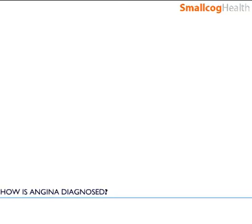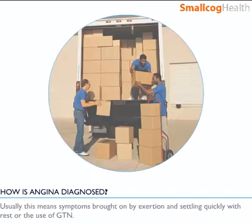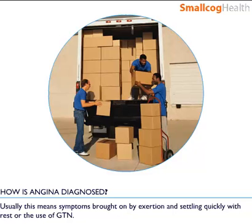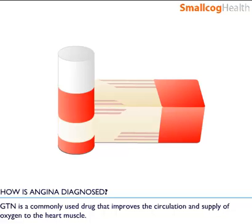How is angina diagnosed? The diagnosis of angina is largely based on the patient's description of the characteristic symptoms associated with the condition. Usually this means symptoms brought on by exertion, then settling quickly with rest, or the use of glyceryl trinitrate. GTN is a commonly used drug that improves the circulation and supply of oxygen to the heart muscle.